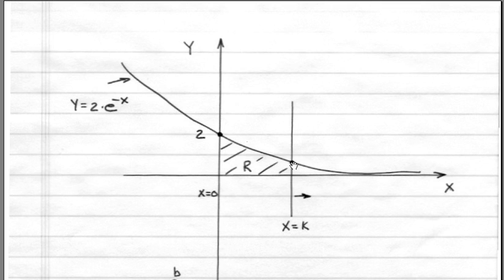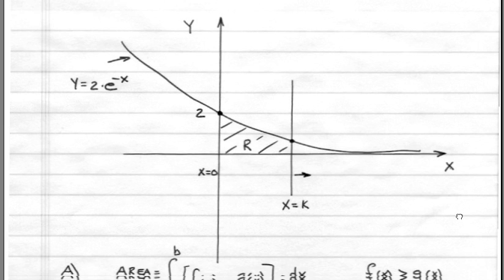When we look at just the first quadrant of the Cartesian plane, we can see the region or area R defined by these four borders. We have x equals 0 as the left-hand border and x equals k as the right-hand border. k is not specified, so this is a variable, and we want to put the area of this region in terms of k.